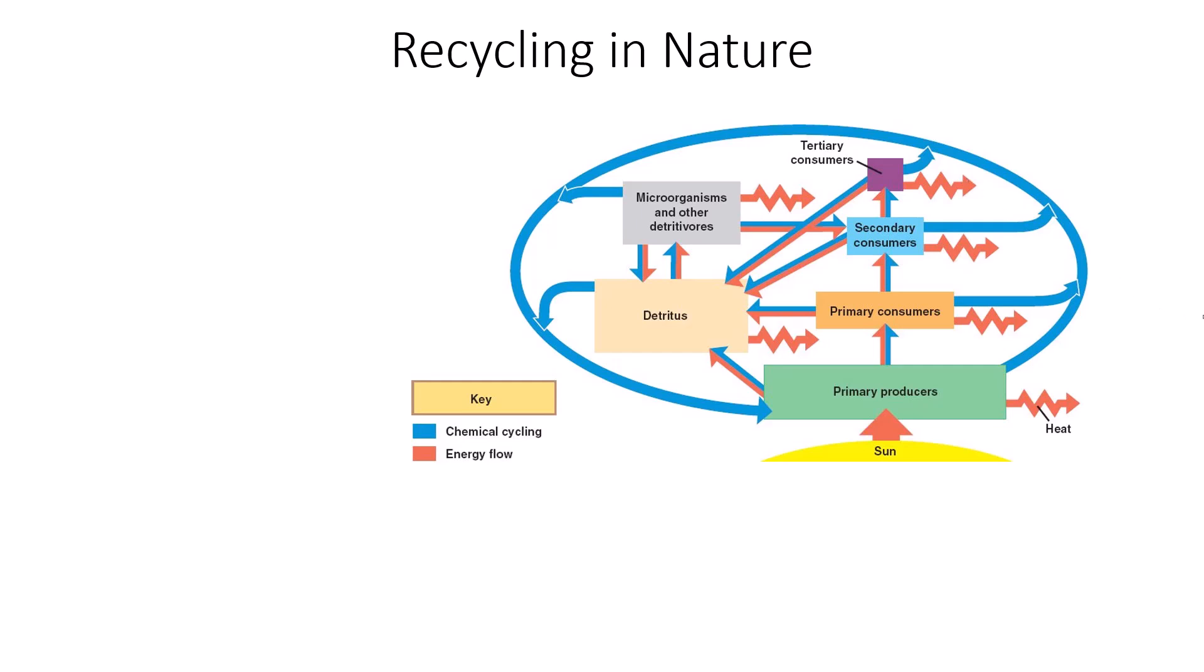The main difference between the two is that energy flows in one way direction from the Sun through the primary producers and then ultimately through the consumers before being lost as heat or used during cellular energetics. Recycling of matter is going to be recycled and the nutrients are going to consistently move through the trophic levels just like the energy does, but it will always be recycled. It is never lost.